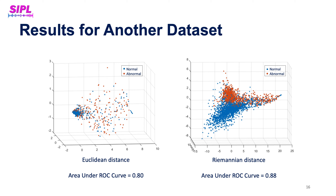Here are the results. We again visualize clustering with the Euclidean distance versus the Riemannian distance. For this dataset as well, the Riemannian distance is superior, resulting in a tight normal cluster and better separation between normal and abnormal. This is also reflected in the area under the curve values, with the Riemannian distance achieving a much higher value than the Euclidean one — and again without changing a single line of code.